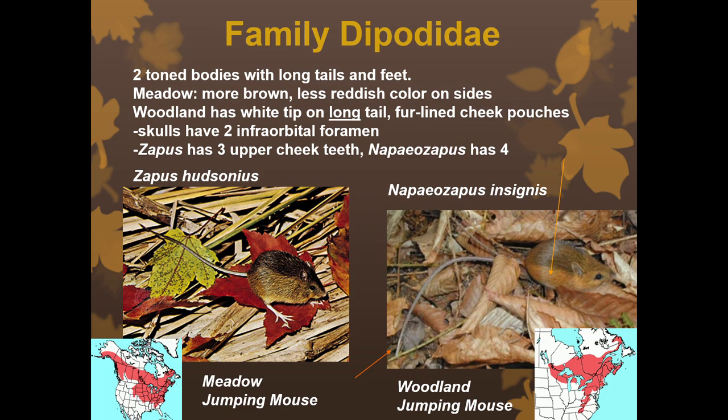Our last family is Dipodidae. These have two-toned bodies and very long tails and feet, so if you see them in person the tail gives it away — much longer than other species. Within this family are our jumping mice: the meadow jumping mouse and the woodland jumping mouse. The meadow jumping mouse is a little more brown with less reddish color on the sides. The woodland jumping mouse has a white tip on its long tail, which you can see in the images, and that's a good way to tell the two apart along with that subtle color difference.